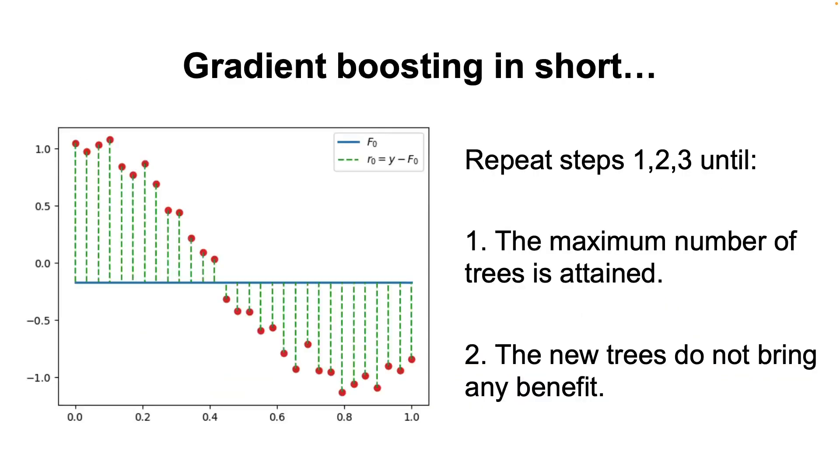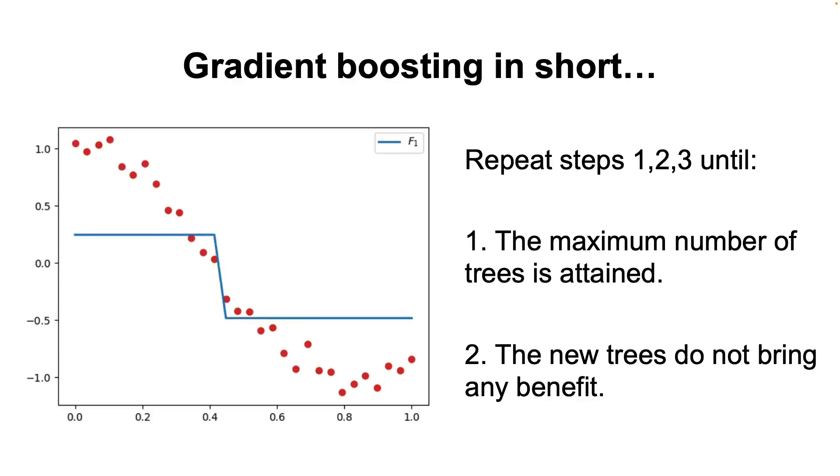And that's basically it. In gradient boosting, we repeat these steps until we attain the specified number of trees or until the new trees do not bring any meaningful improvement.